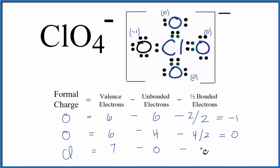We'll subtract from that one-half of the bonded electrons. We have 2, 4, 6, 8, 10, 12, 14 bonded electrons. So 7 minus 7 equals 0. The formal charge on this chlorine is 0.